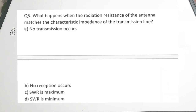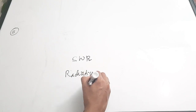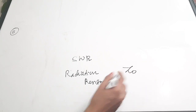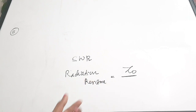The fifth question is connected to transmission lines and antennas. What happens when the radiation resistance of the antenna matches the characteristic impedance Z0 of the transmission line? A. No transmission occurs, B. No reception occurs, C. SWR is maximum, D. SWR is minimum. When the radiation resistance equals the characteristic impedance Z0, there will be minimum standing waves generated, so the standing wave ratio will be minimum. Correct answer is option D.